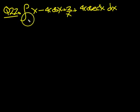Okay guys, let's have a go at 22 then. It's the integral of x minus 4 cos x plus 2 over x plus 4 cosec squared x dx.